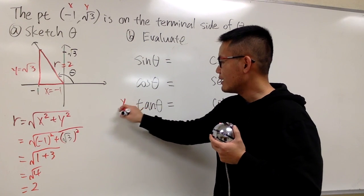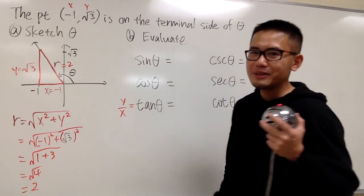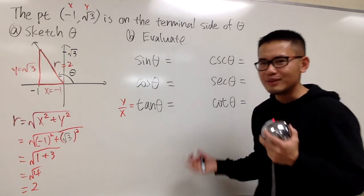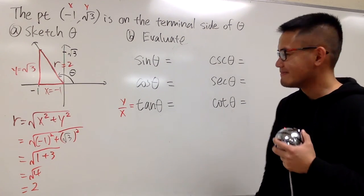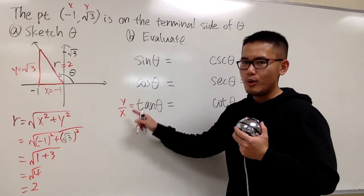Tangent theta is y over x. Remember that. And you have to remember all these definitions really, really well. Tangent theta is y over x.